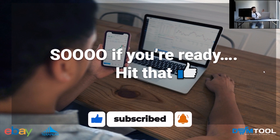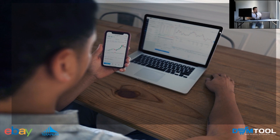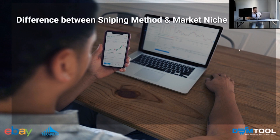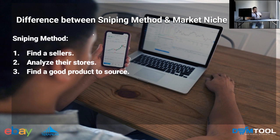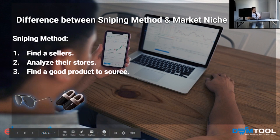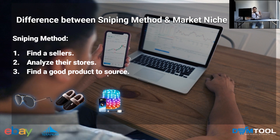Let's begin by addressing the difference between the sniping method and market research. Sniping is actually three simple steps: number one, you find sellers or competitors; number two, you analyze their stores; and number three, you find good products to source from their stores — for example, glasses, slippers, lights. It could be any product from any category. You look for the product itself, based on finding a good seller.